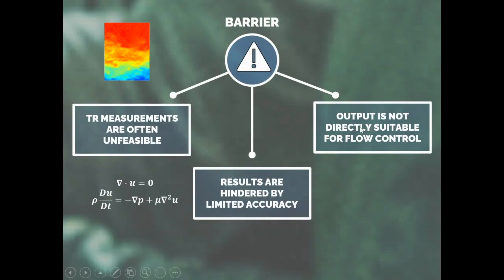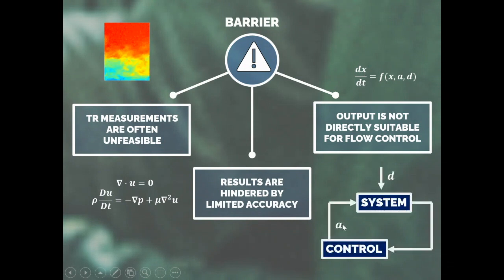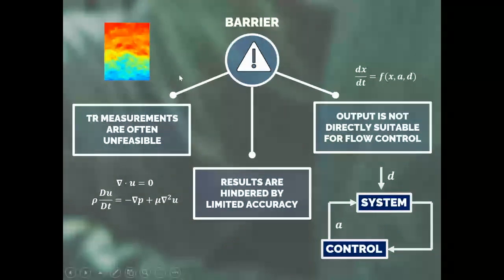The third barrier is we don't have an output that is directly suitable for flow control. We really aim to have something like an equation of the dynamics. We actually have to model the dynamics of our system in terms of actuations, in terms of local state, and in terms of disturbances.